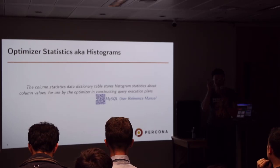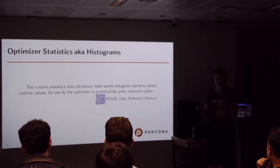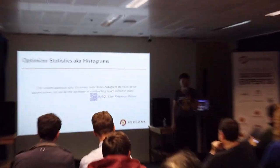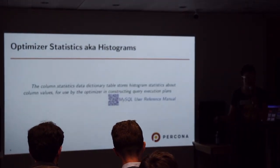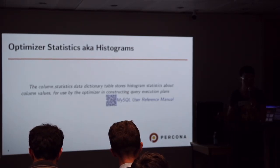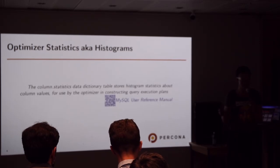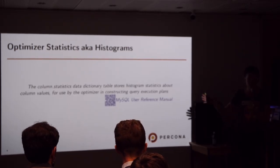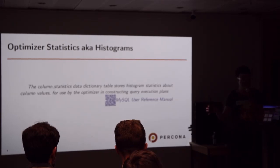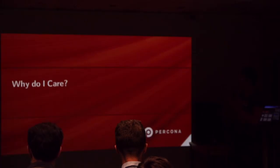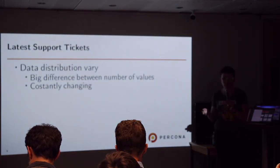I want to ask: who here uses MySQL? Who knows about index cardinality and index statistics? Currently, MySQL versions up to 8.0 use only one way to tell the optimizer which plan to choose — that's statistics collected by the storage engine. Histograms work on a different level. Index statistics is collected at the storage engine level, while the optimizer histogram is collected by the optimizer itself.